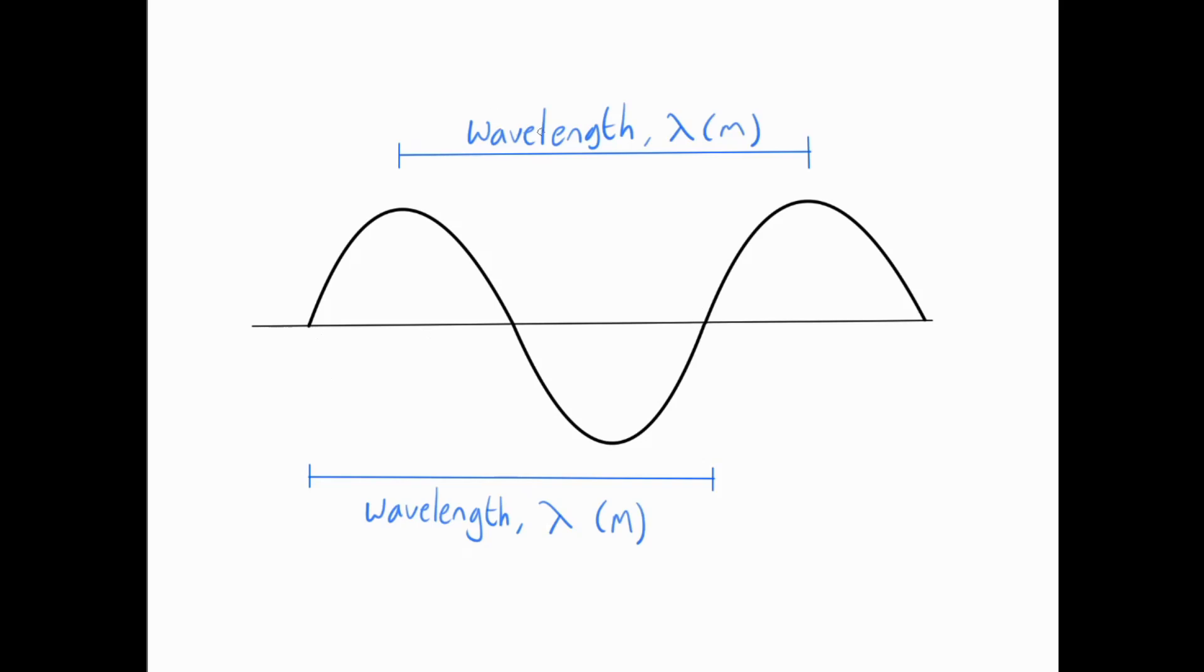Now notice the symbol for wavelength. Instead of using W or L, the tradition is to use a Greek letter called lambda. It's something like an upside down Y but it's actually called lambda. So when you're writing wavelength in algebra form you can write that symbol lambda. The unit, well it's a length so it's going to be measured in meters.